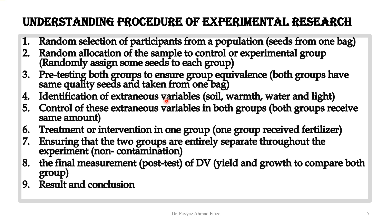Step four is identification of extraneous variables — identifying which variables can change or affect the experiment. We identify such variables so that we can control them. Just as in the wheat experiment, soil, warmth, water, and light were extraneous variables that could have an effect. We identify and then control these extraneous variables in both groups so there is no effect on our result.